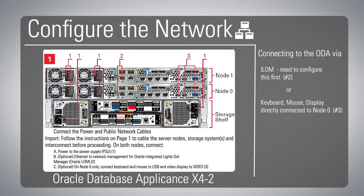Once you've done that, you can log in as root with the password welcome1. You can configure the network using the appliance manager command oakcli configure firstnet. Make sure that you've navigated to the right directory that contains the appliance manager: /opt/oracle/oak/bin. Then you can invoke the appliance manager oakcli.